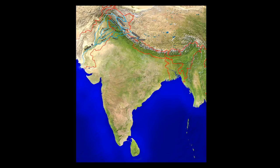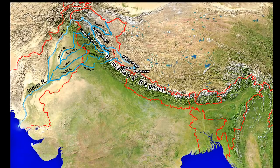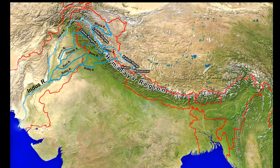Let us now study about the Himalayan rivers. The Indus River: The Indus originates near the Mansarovar Lake from the glaciers of the Kailash Range in western Tibet. It flows in the north-west direction in the Trans-Himalaya region and continues to flow between the Ladakh and Zaskar Ranges.